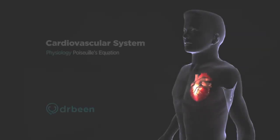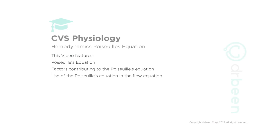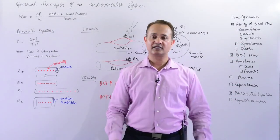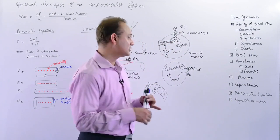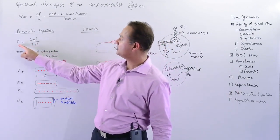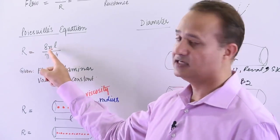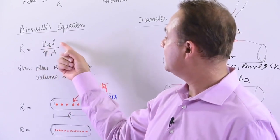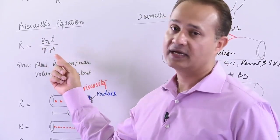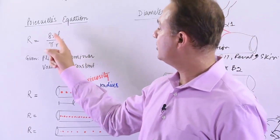All right guys, this is Mubeen. We're talking about cardiovascular system hemodynamics. The lecture today is Poiseuille's equation. Let's look at that equation here. Poiseuille's equation says resistance equals eight times the product of viscosity (η), times length, divided by pi (π) and radius raised to power four. That is the value. Once you calculate that, you get the value of the resistance.